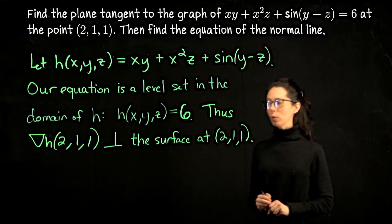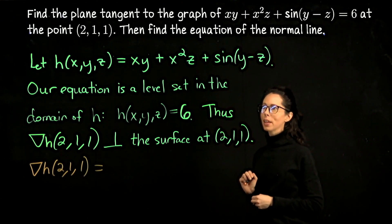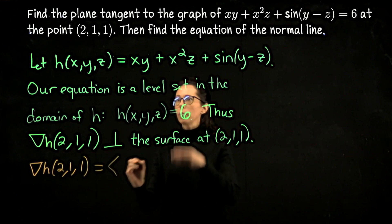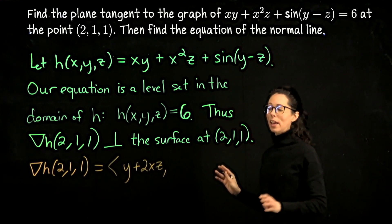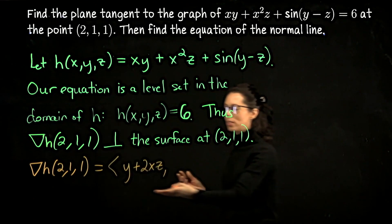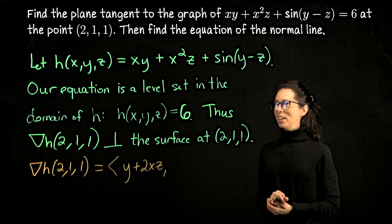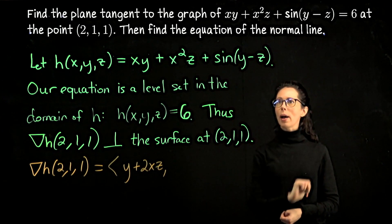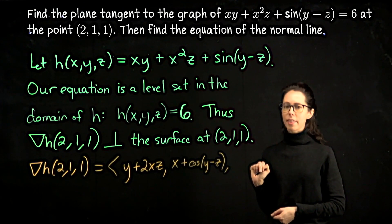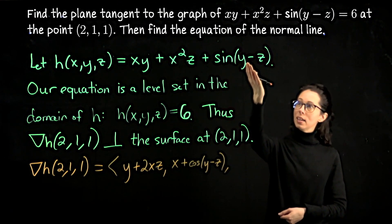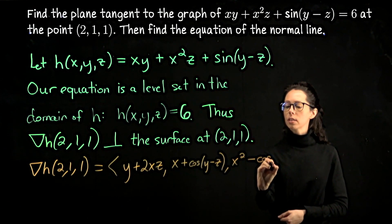Moving right along, let's compute the gradient of h at the point (2,1,1). To do that, we need to take the partial derivative of this right-hand side with respect to x, then y, then z. If I take the partial derivative with respect to x, we get y + 2xz. Let's take the partial derivative with respect to y: we'll have x + cos(y - z). And then with respect to z, we will have x² + cos(y - z) times negative 1 because of the chain rule here, so it's negative z inside. We need to pick up the factor of negative 1. Let's write x² - cos(y - z).